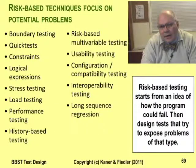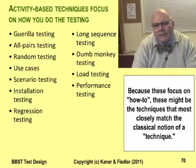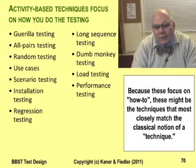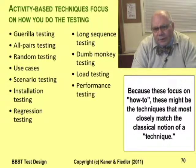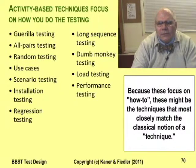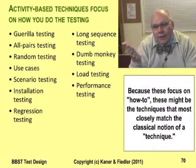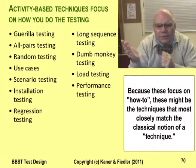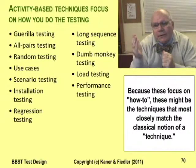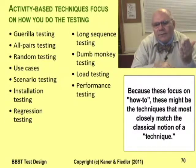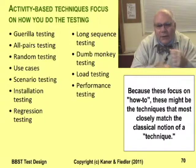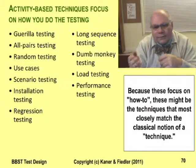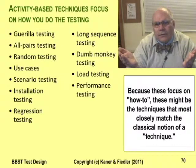Risk-based techniques start from ideas about how the program can fail. Different techniques look for different kinds of bugs. Activity-based techniques focus on how you actually do the testing — the activities. This is a pretty miscellaneous group, and most of the tests we classify this way we also classify in some other way. For example, we list long-sequence automated testing as both risk-based and activity-based. We see it as risk-based because these tests are especially well-suited to hunting specific kinds of bugs that won't show up in normal testing. We see it as activity-based because every time we think about this kind of testing, we think about activities — programming, maintenance, developing diagnostics, and the kinds of work required to create and run the tests.